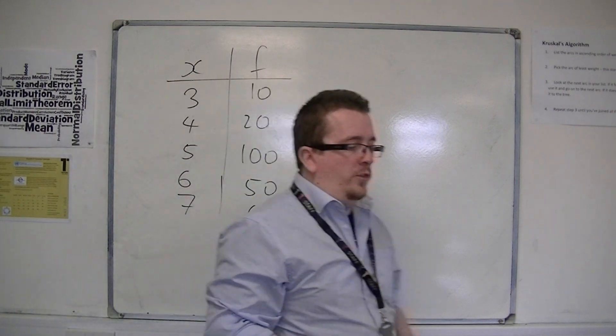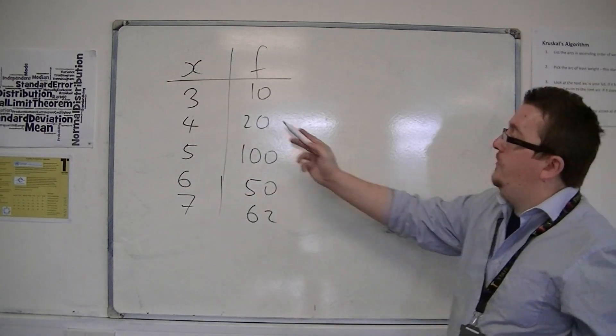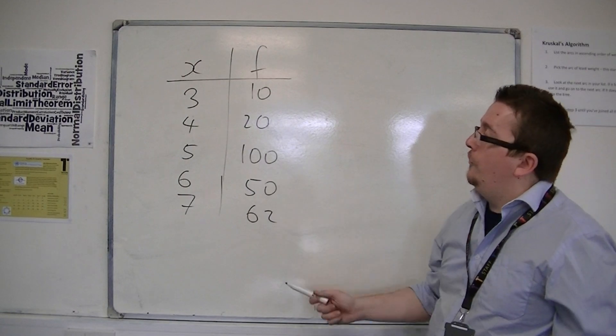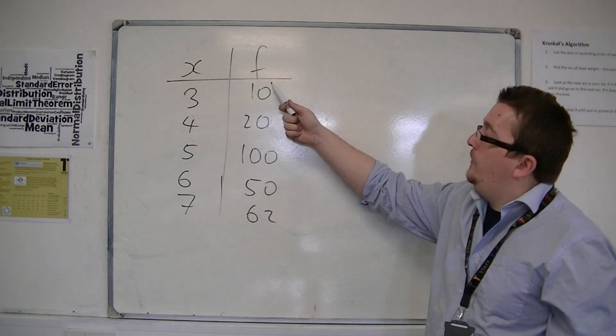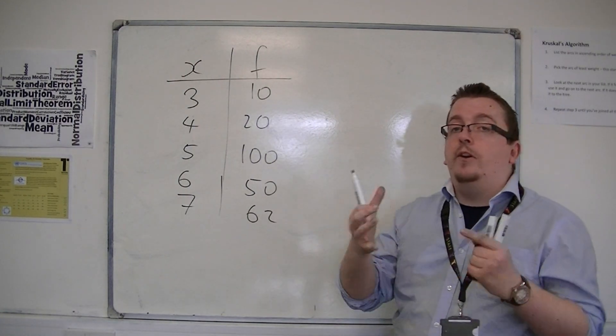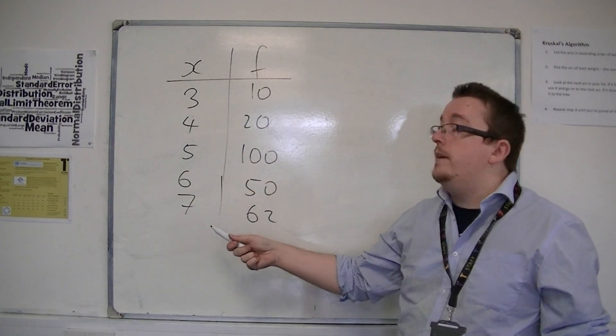Okay, if these were your x's, you've got 3, 4, 5, 6, 7, and these are your frequencies, this is telling you, remember, how many times these numbers appear.